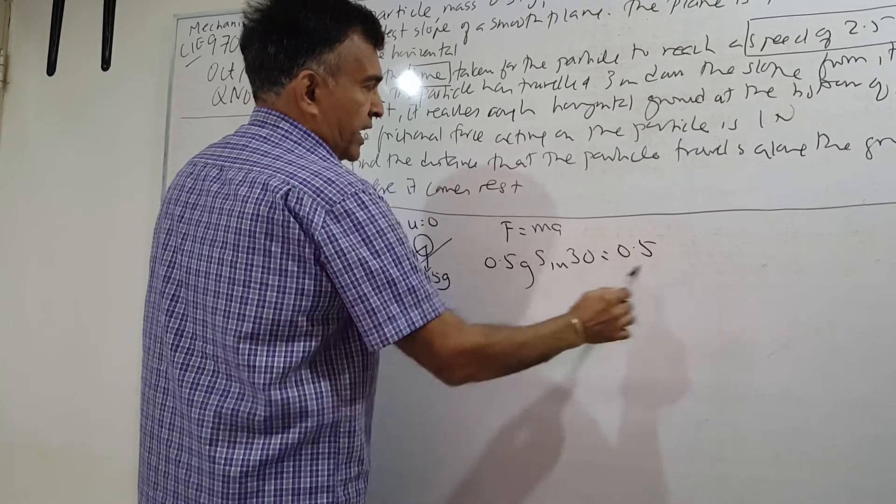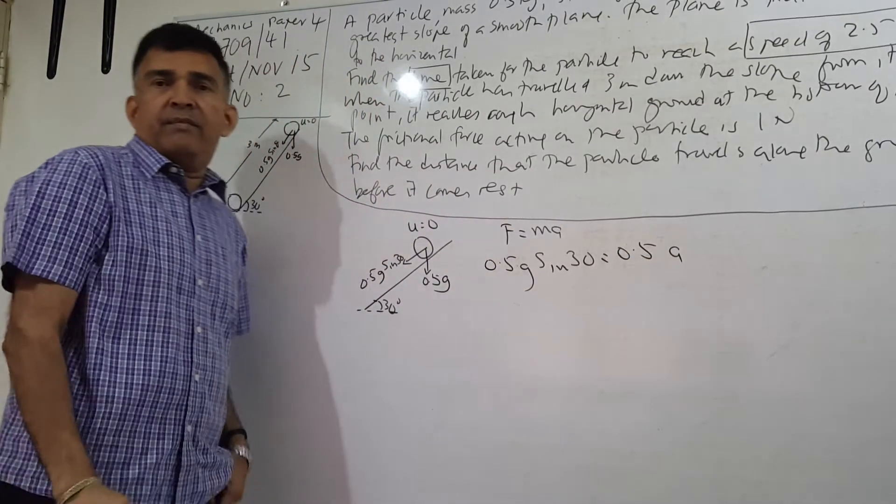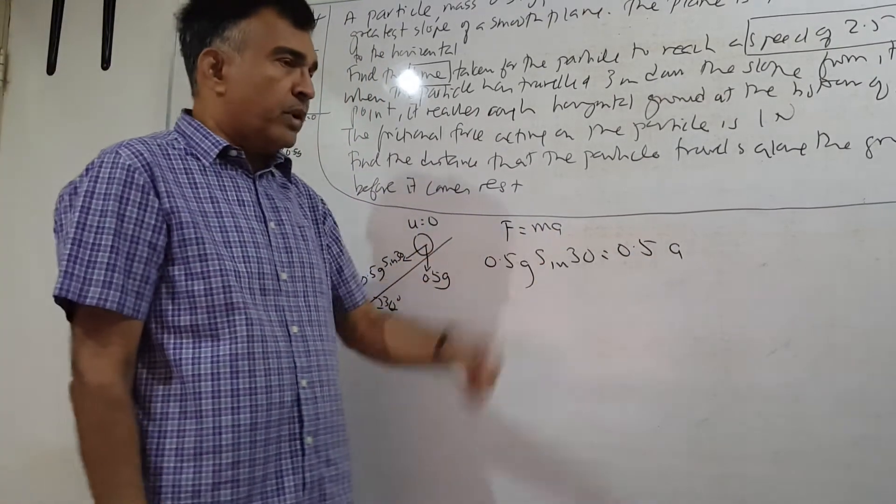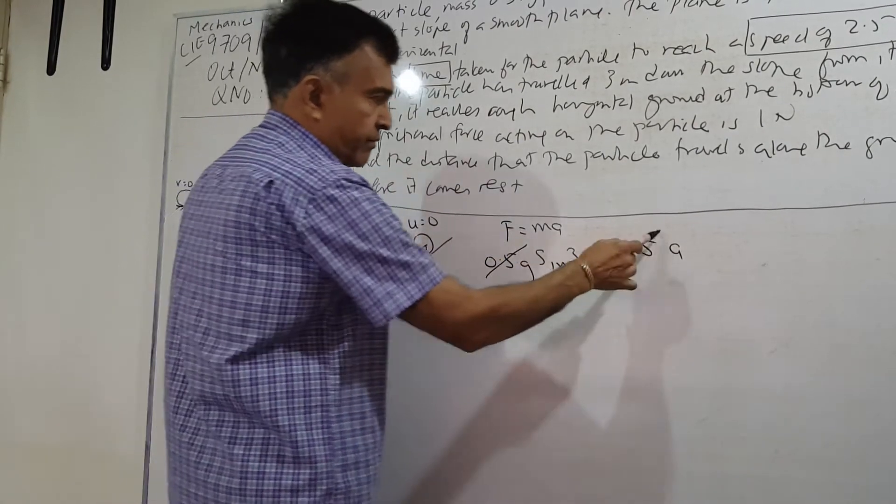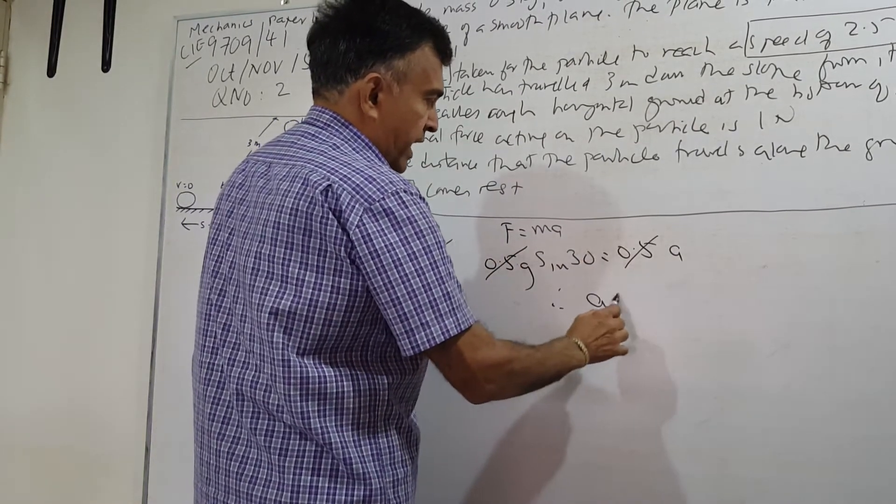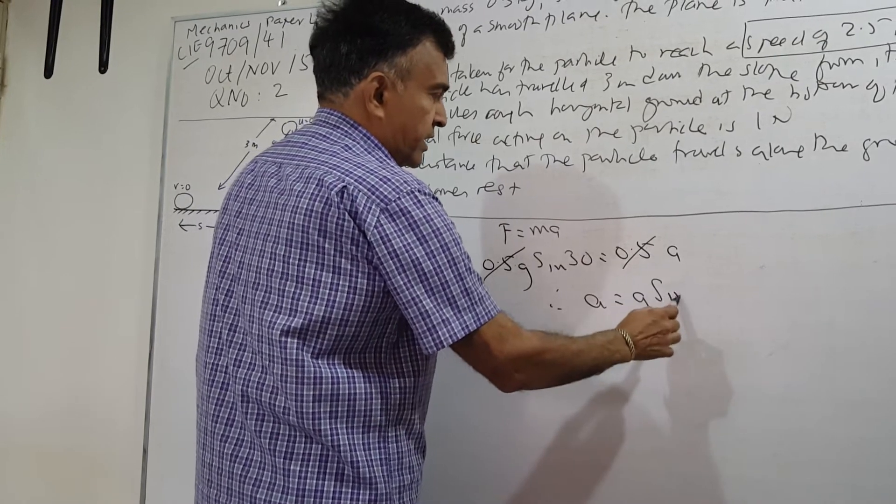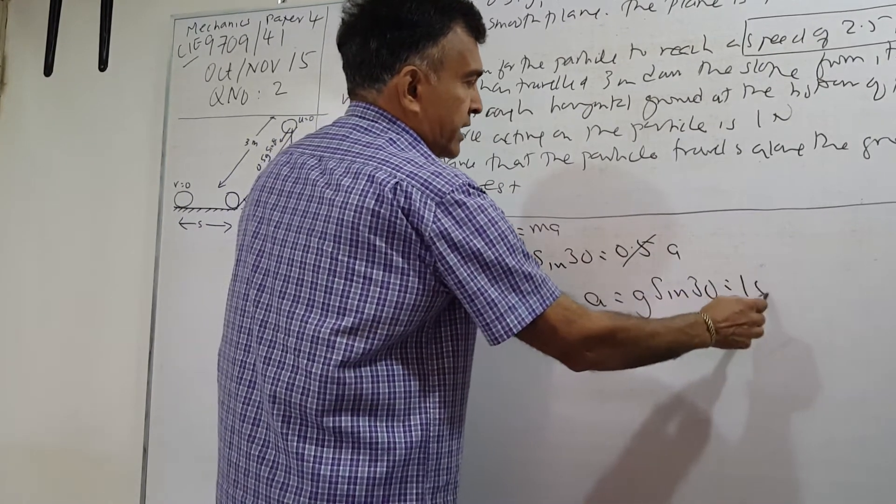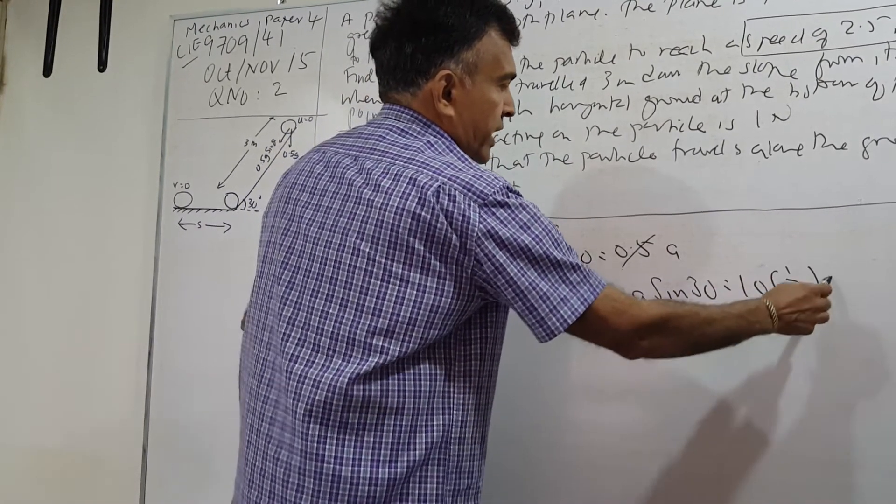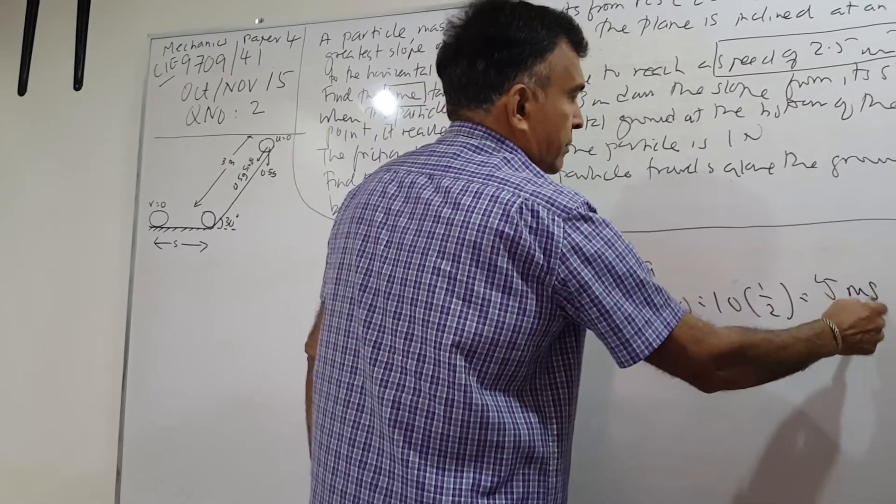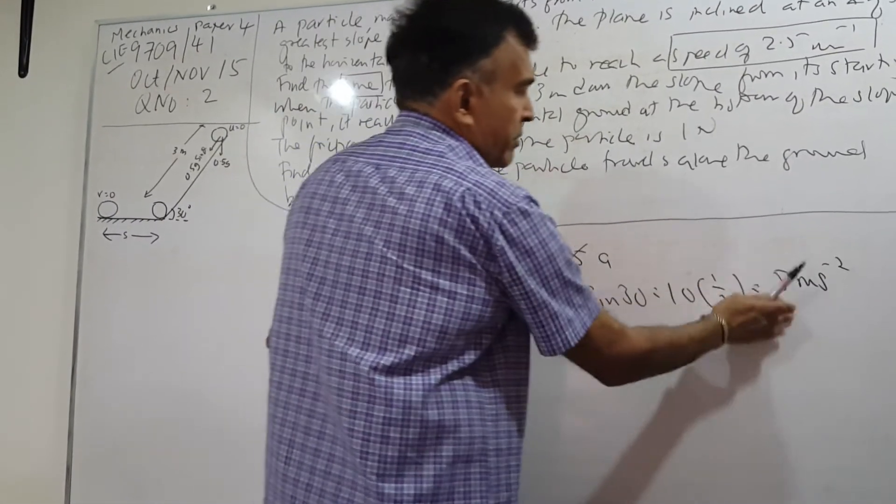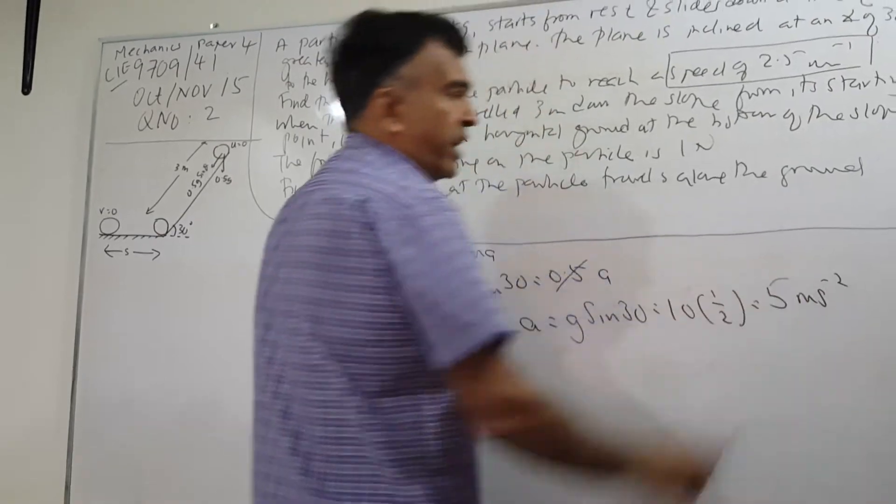We're using F equals ma, so this cancels. Therefore my a will be g sine 30, which will be 10 times a half. You will get 5 meters per second squared. That's my acceleration.